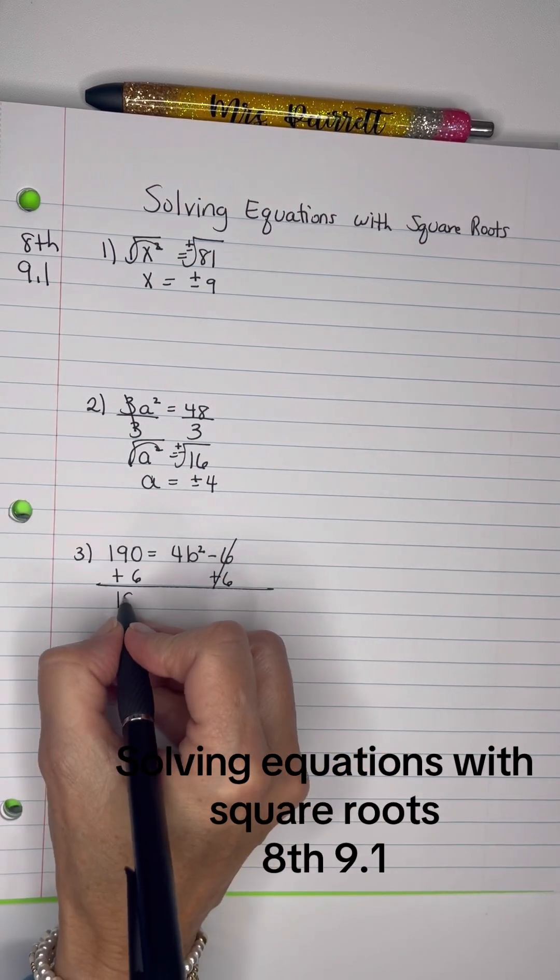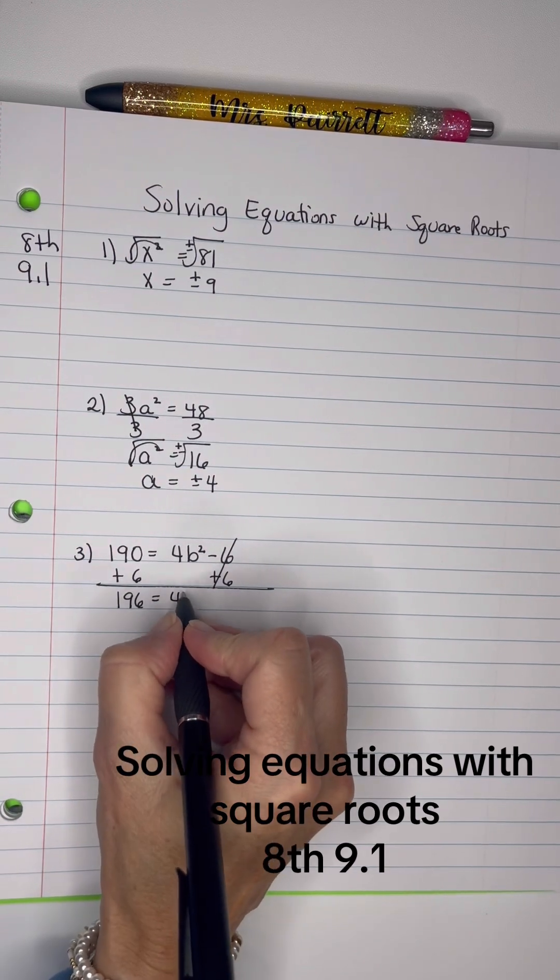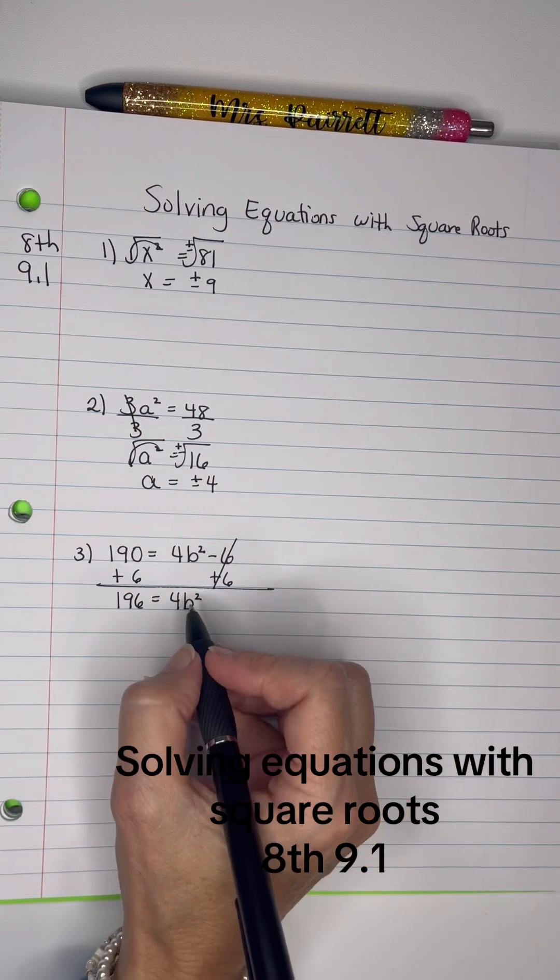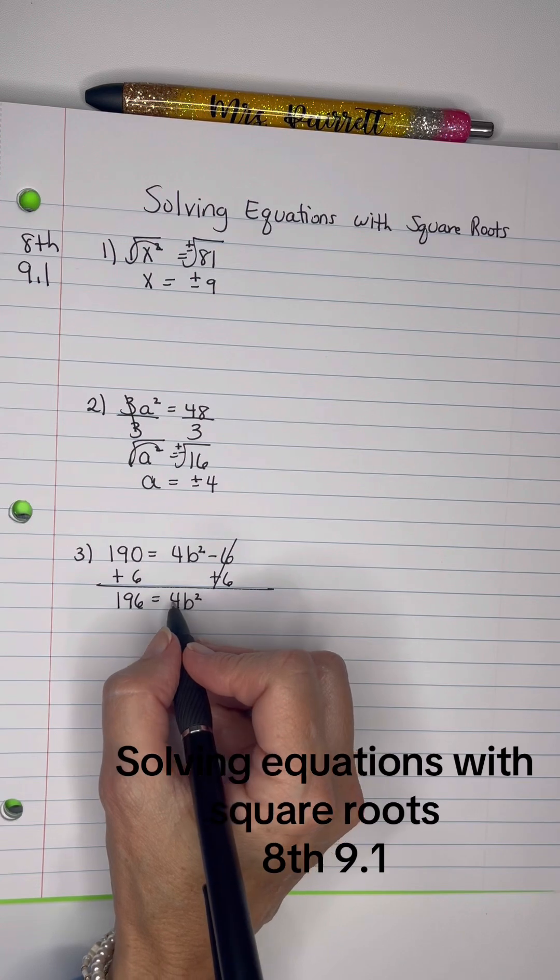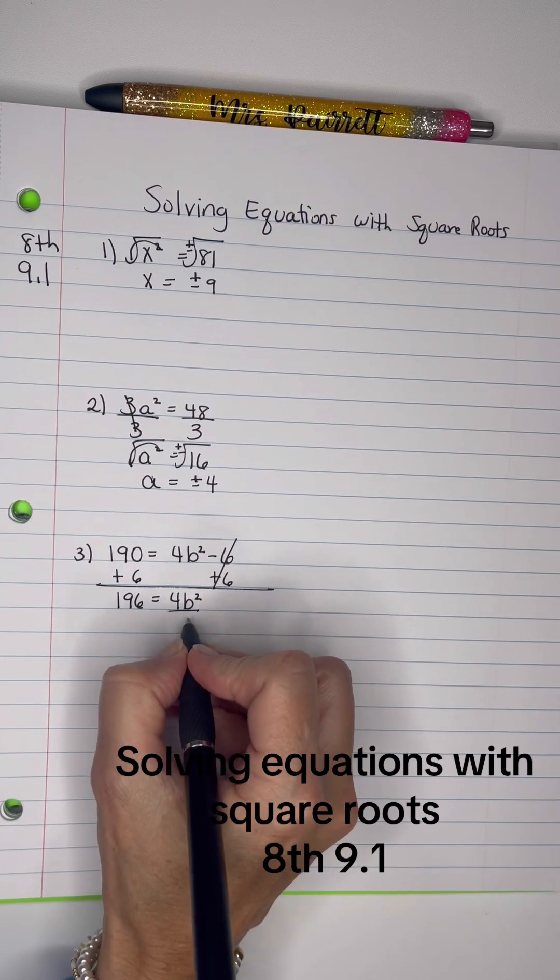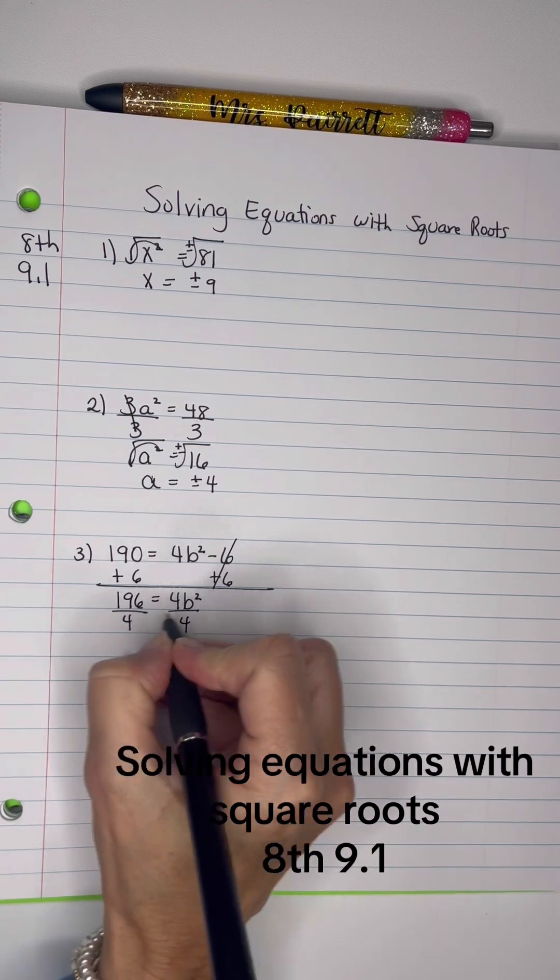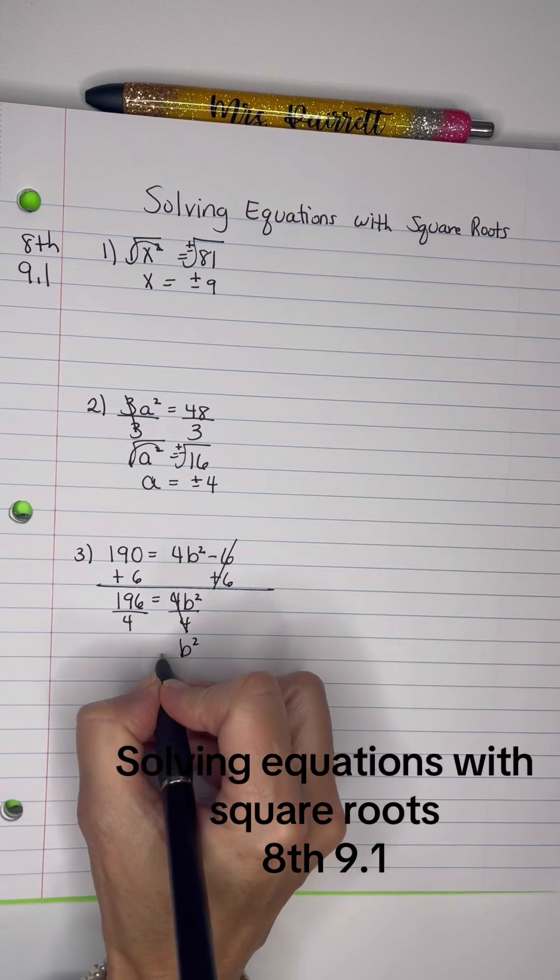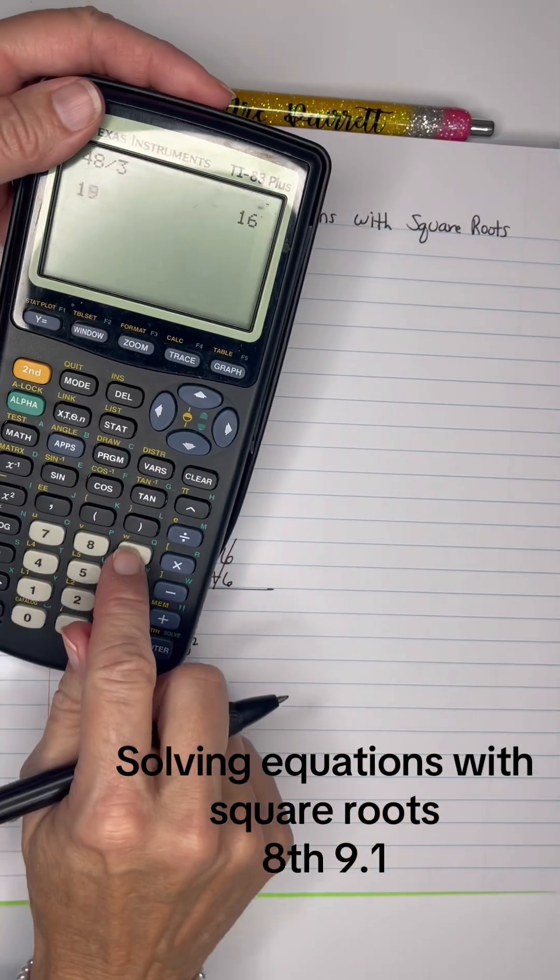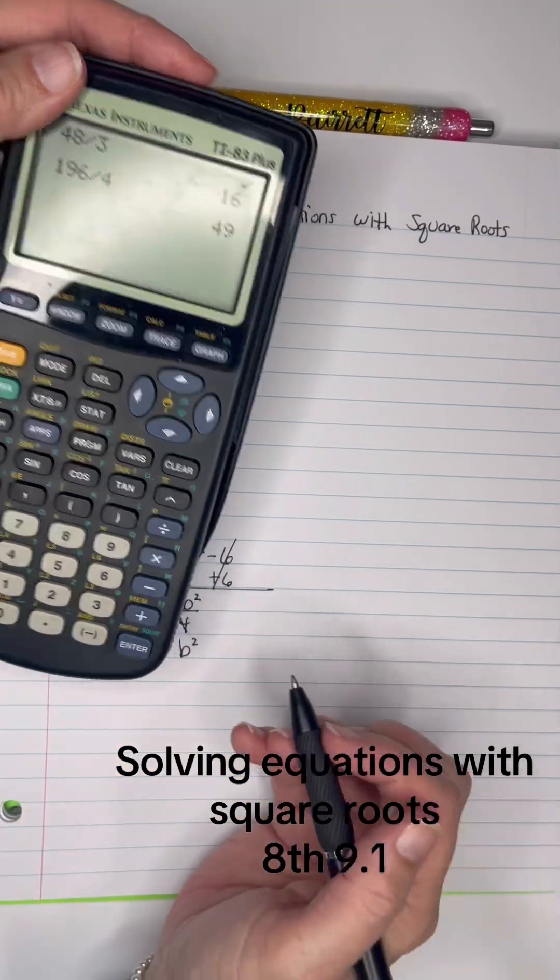So we have 196 equals 4b squared, and then we have to get rid of the 4. This means 4 is being multiplied by b squared, so the opposite operation is to divide by 4. So I have b squared equals 196 divided by 4, which is 49.